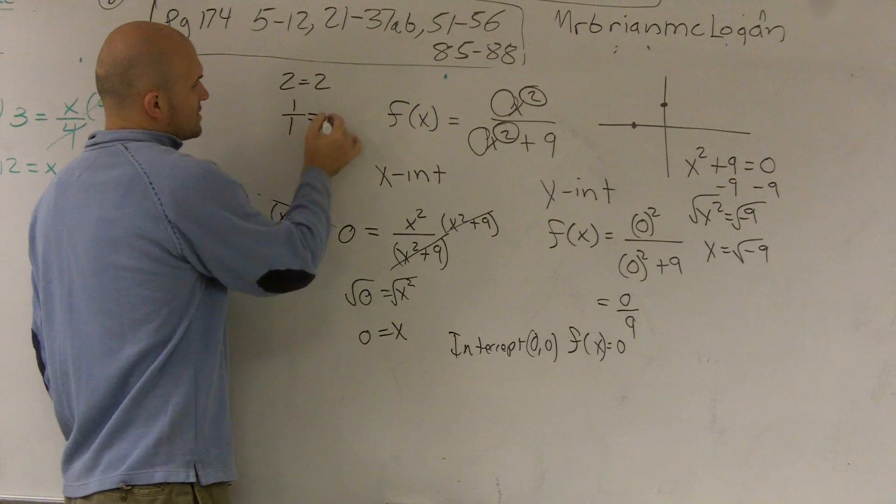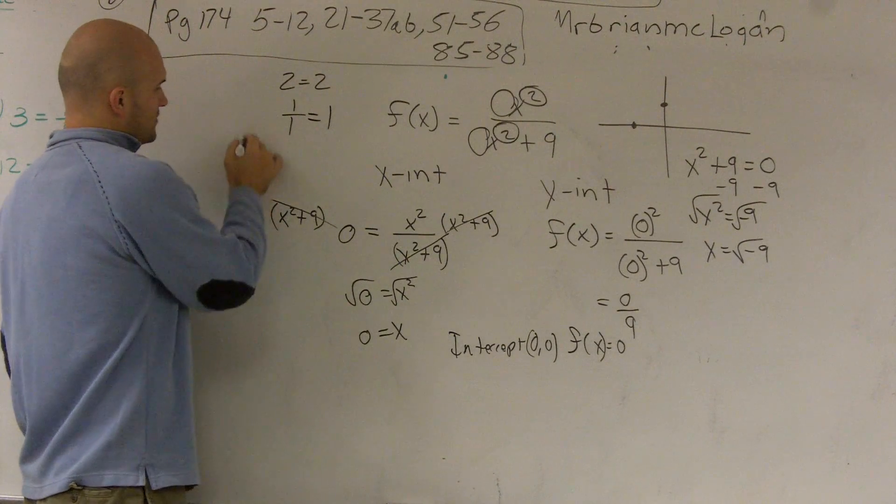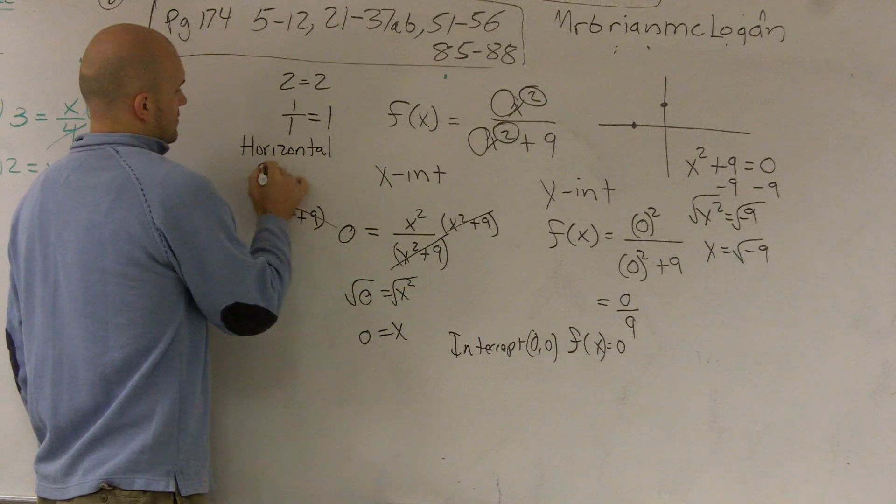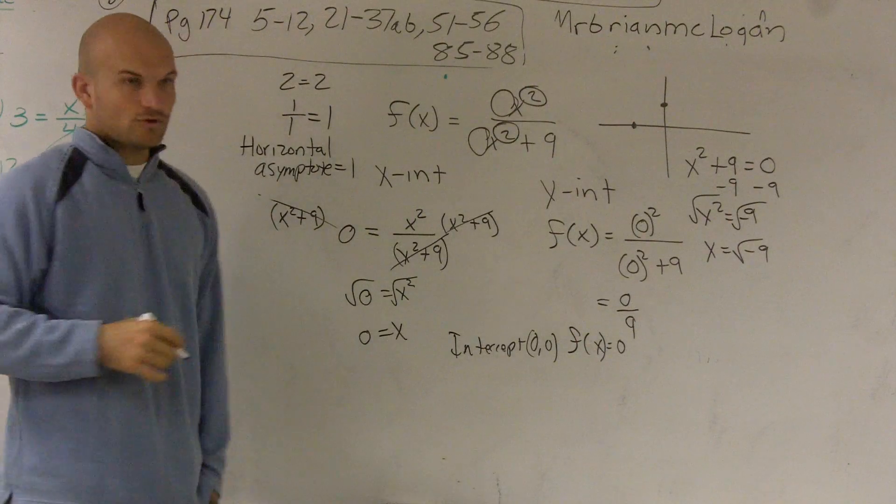So this would be 1 over 1, which is equal to 1. So therefore, we can say the horizontal asymptote is going to be equal to 1.